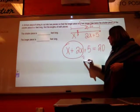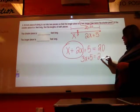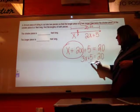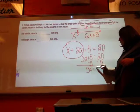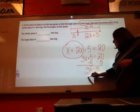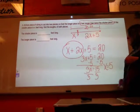x plus 2x gets me 3x plus 5 equals 20. Then I have to subtract 5 from both sides. So now I get 3x is equal to 15 divided by 3. Well, x is equal to 5.